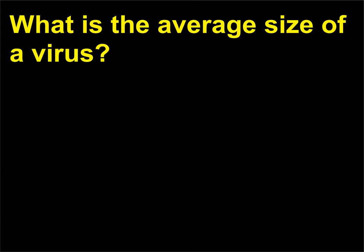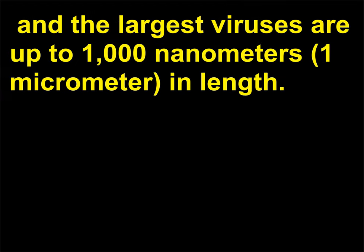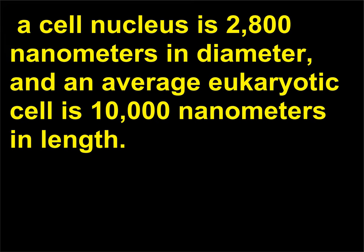What is the average size of a virus? The smallest viruses are about 17 nanometers in diameter, and the largest viruses are up to 1000 nanometers, or 1 micrometer, in length. By comparison, the bacterium Escherichia coli is 2000 nanometers in length, a cell nucleus is 2800 nanometers in diameter, and an average eukaryotic cell is 10,000 nanometers in length.